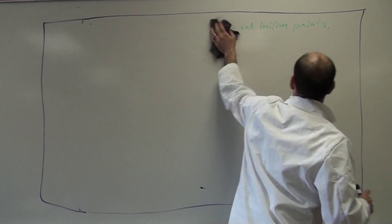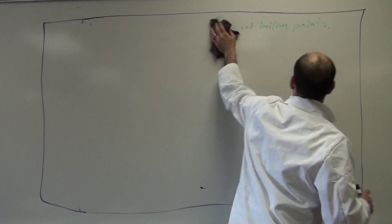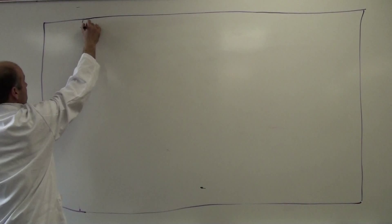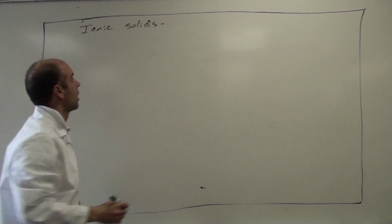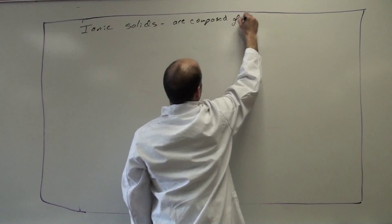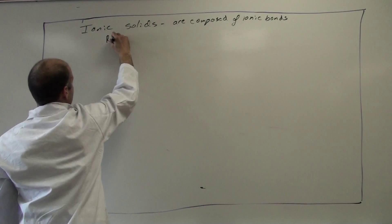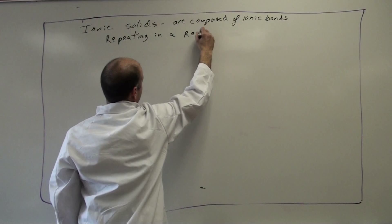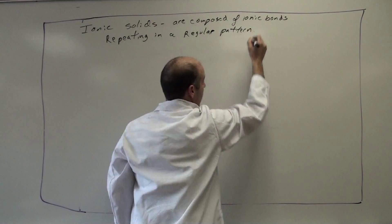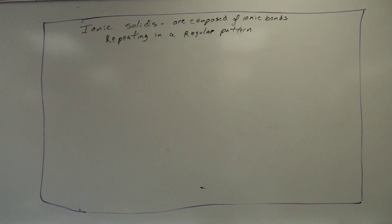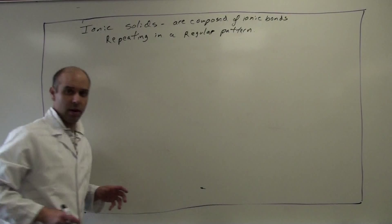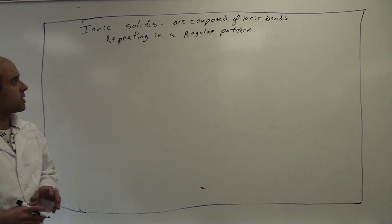We then move on to ionic solids. Ionic solids are composed of ionic bonds, also repeating in a regular pattern. We are not going to give a very in-depth explanation of ionic solids. Instead, we are going to go over just a very simple explanation, and that explanation is going to focus entirely around sodium chloride.